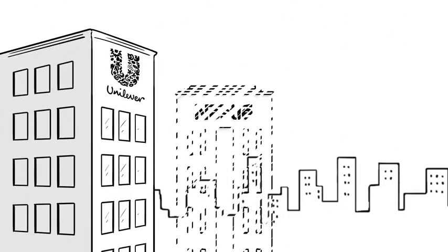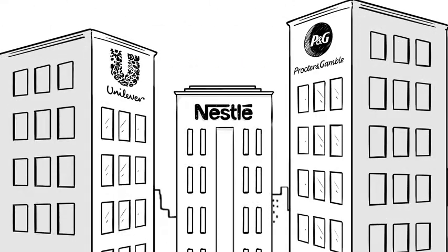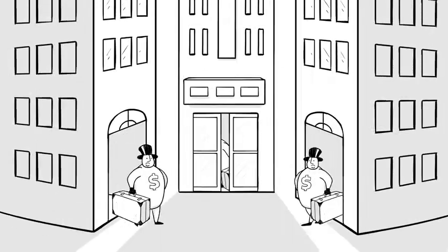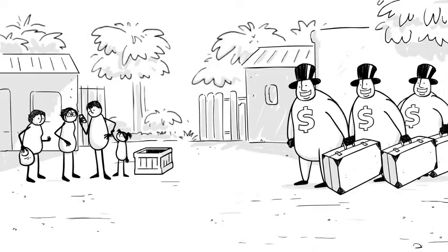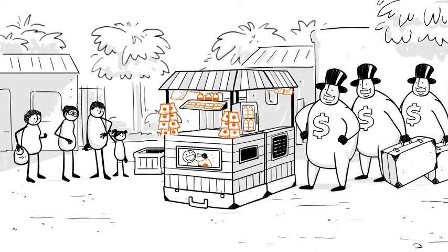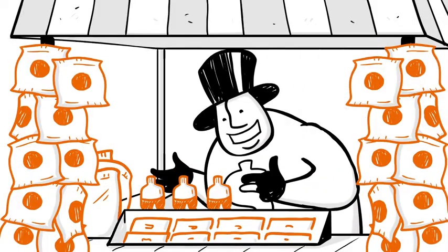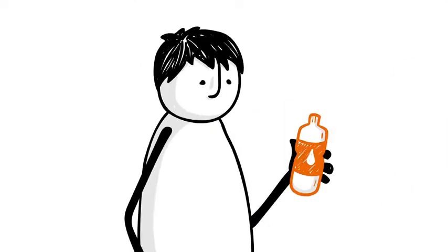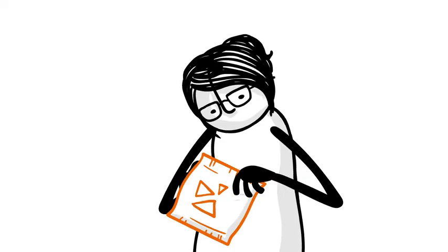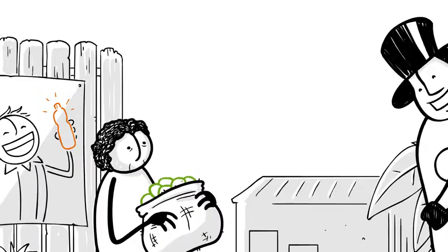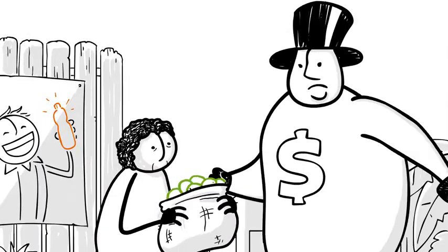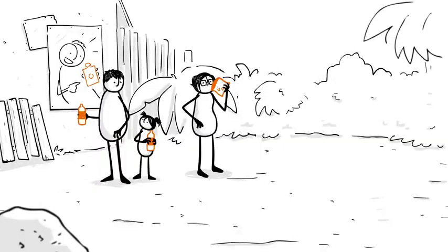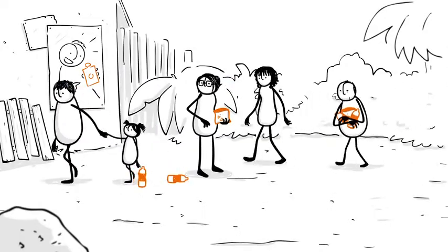Corporations like Unilever, Nestle, and Procter & Gamble are aggressively marketing single-use plastic products around the world. These companies go to places like Indonesia, where I live, and push their products onto communities that just aren't prepared to deal with all that plastic. Maybe they're used to using natural packaging. Maybe they live on a tiny island without a system of waste collection.